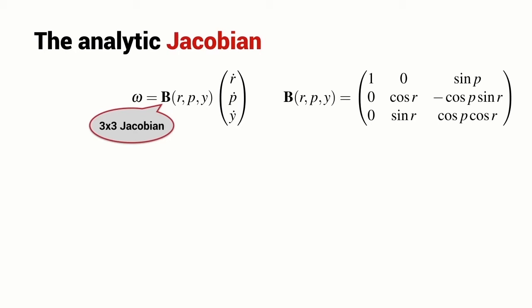B is a function of the roll, pitch, yaw angles, and more precisely, it's a function of the roll angle and the pitch angle. The yaw angle does not appear in the expression for this Jacobian matrix.